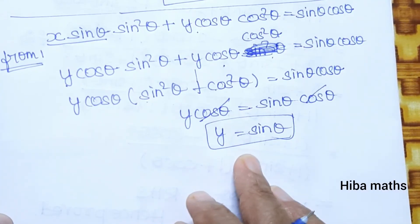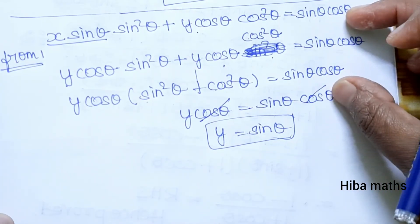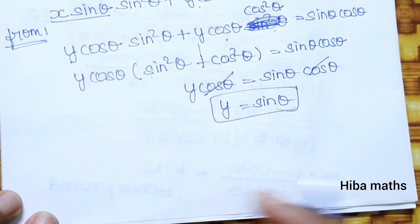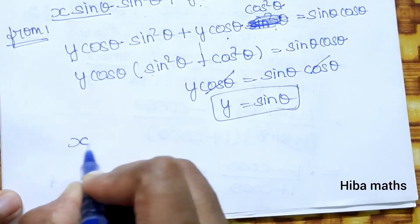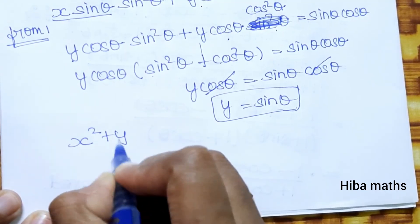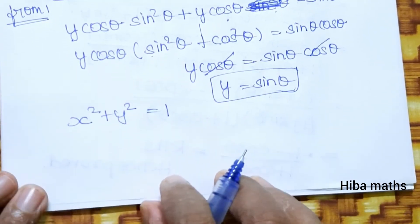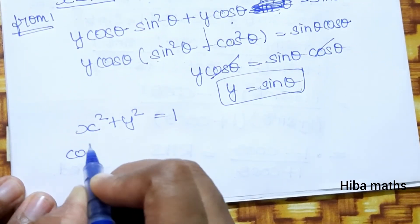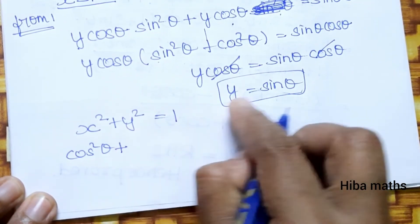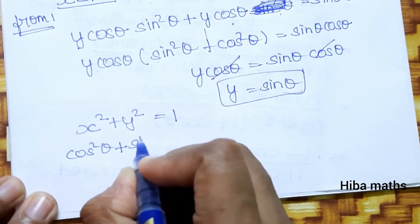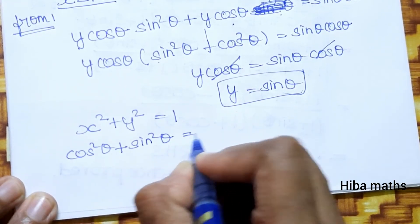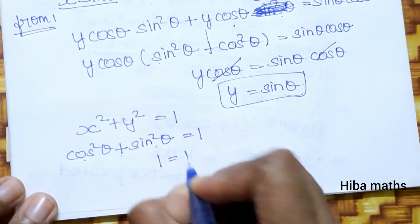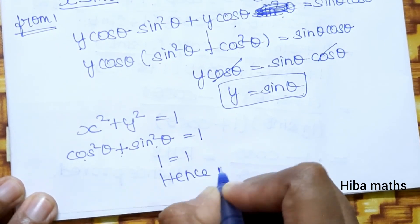Now let's complete the proof. Since x = cosθ and y = sinθ, x² + y² = cos²θ + sin²θ = 1. Hence proved.